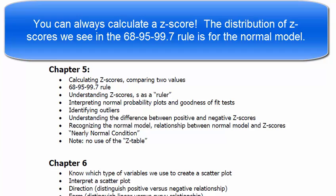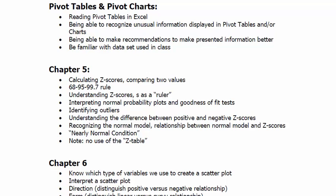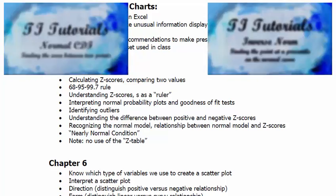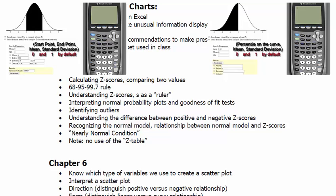The normal model and its relationship to z-scores is very important. We use the nearly normal condition because if data is normal enough we can apply the model. We might check by looking at the histogram, the normal probability plot, or doing the goodness of fit test. We will not be using z-tables; you can use the calculator. My biggest suggestion for the test: draw out the picture first.